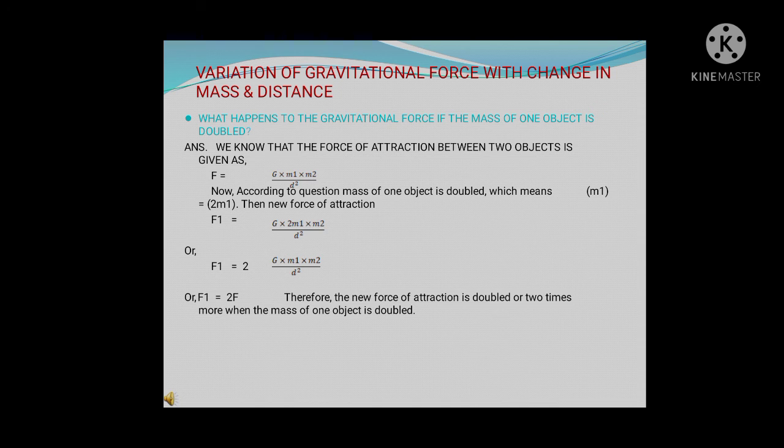The new force of attraction, suppose it as F1, will be: F1 = G·(2m1)·m2 / d². In the next step, bringing the 2 outside: F1 = 2 · (G·m1·m2 / d²). Since G·m1·m2 / d² equals the initial force F, we get F1 = 2F. Therefore the new force of attraction is doubled when the mass of one object is doubled.